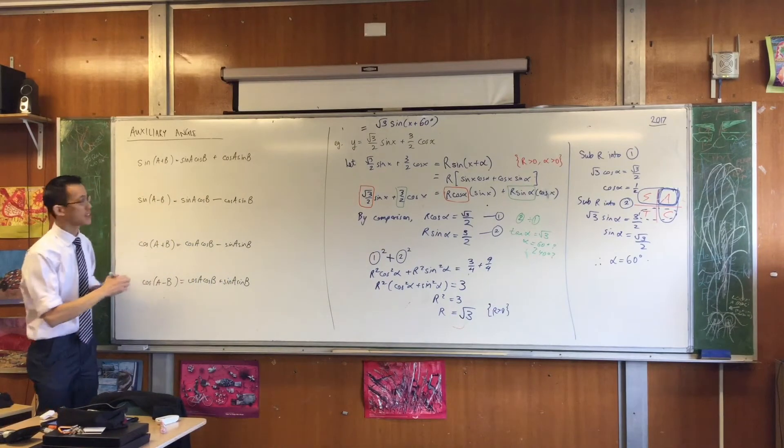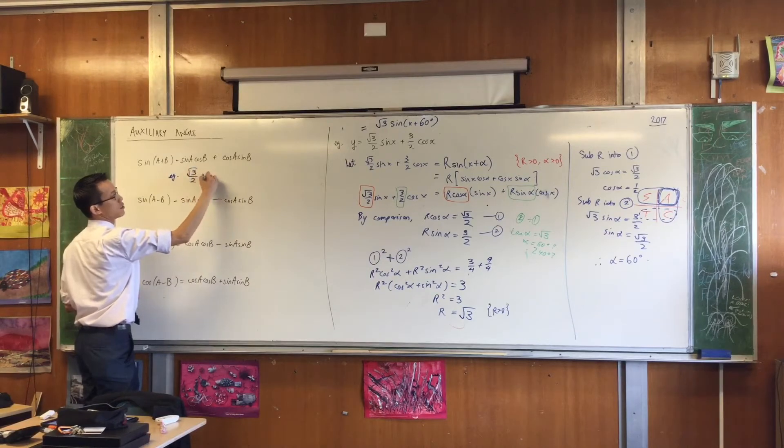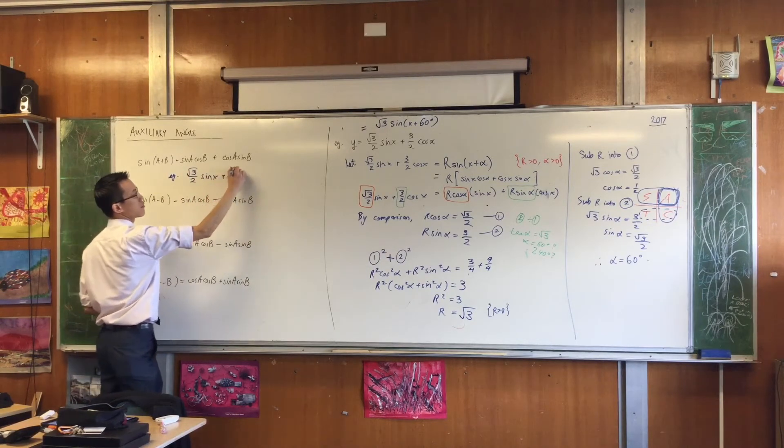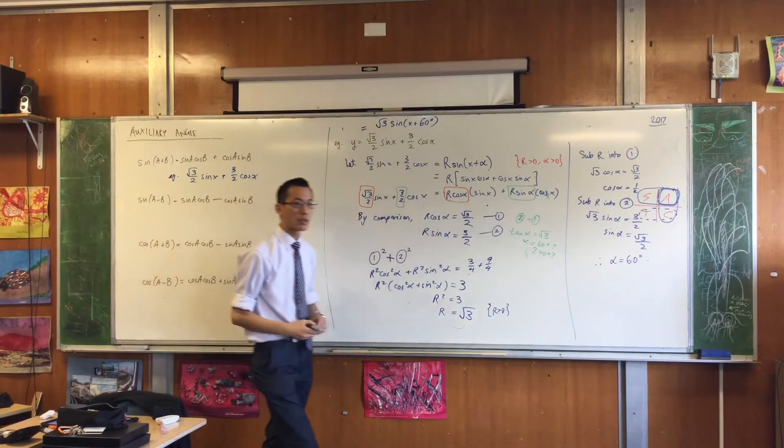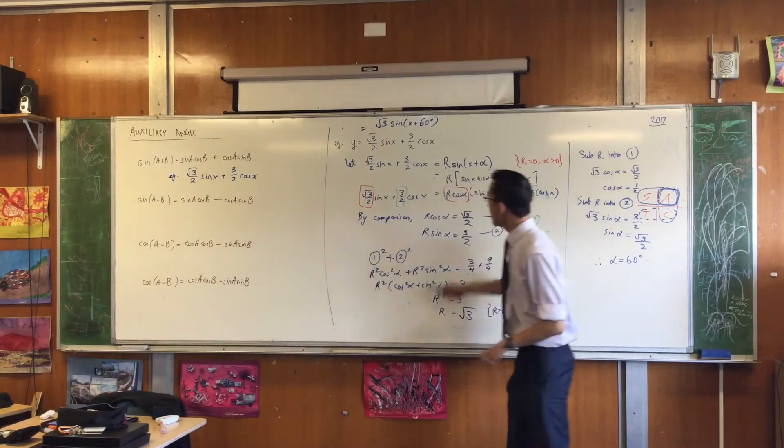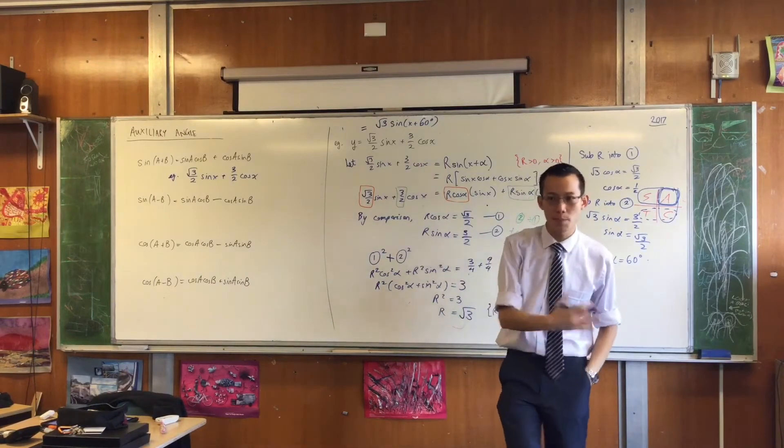I'm actually going to write the example I need. For example, I had root 3 on 2 sine x plus 3 on 2 cos x. So I looked at the question, and I saw, okay, well, this thing here, it must have come from some expansion.